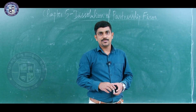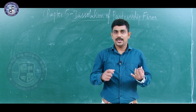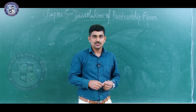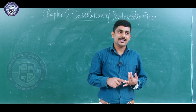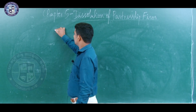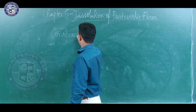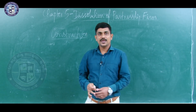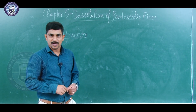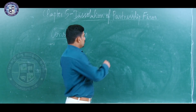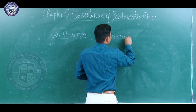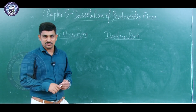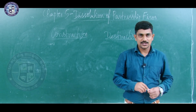In partnership, we have already studied admission of a partner, retirement of a partner, and death of a partner. All these chapters — admission, retirement, and death — deal with the construction, that is the making, forming, and running of the partnership business. This chapter deals with the destruction, meaning the discontinuation or closing down, of the partnership business.